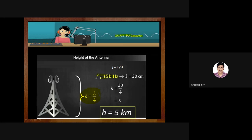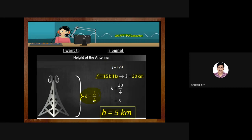Suppose I want to transmit a signal at 15 kHz without modulation. The wavelength λ would be 20 kilometers, and h = λ/4 = 5 kilometers. As you all know, designing an antenna of height 5 kilometers is not practically possible and not even feasible.